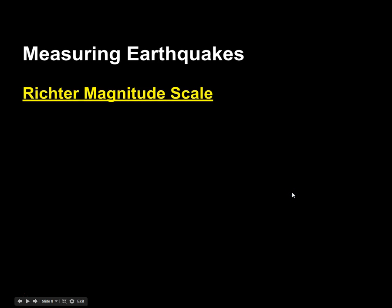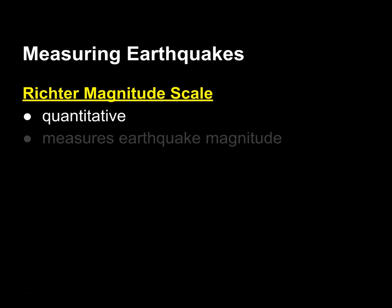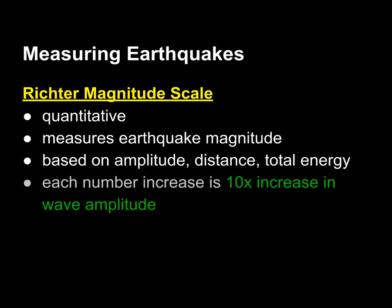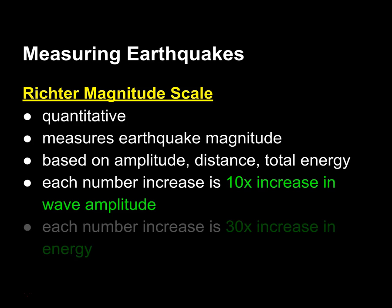The other way we can look at earthquakes is through the Richter Scale, which most people have heard of before. It's quantitative — it looks at the amplitude and the energy of the earthquake waves to assign a magnitude number. You've heard of an 8 or a 9 on the Richter Scale. Each number increase is 10 times the increase in wave amplitude, so every time you go up a number it's increasing by tenfold. I'll do a sample problem in a little bit to demonstrate what that means.